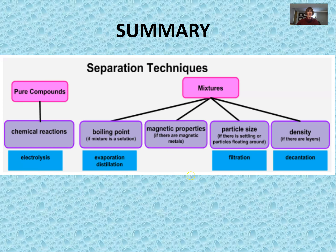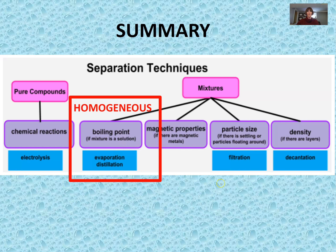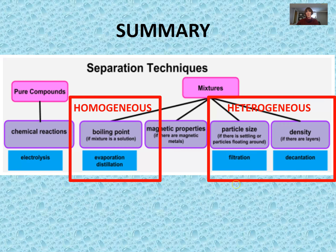In summary, these are the physical ways we separate mixtures. For a homogeneous mixture we use evaporation or distillation. For heterogeneous mixtures we use filtration — relying on particle size and larger particles settling out — or decantation, relying on density differences between layers. Think about how these apply in a lab situation. Have a great day, Falcons!